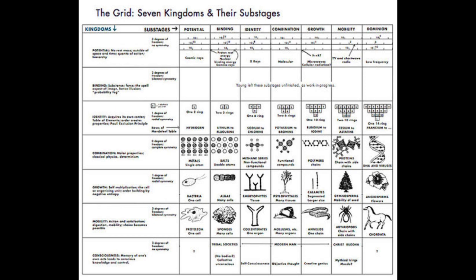For the principle of growth, we have annelids, which are the worm-like creatures that have one chain. This corresponds to the growth principle at the molecular level of polymerization, and at the plant level of the segmented calamites. An annelid is a chain, kind of like a centipede. For arthropods, we get the principle of mobility, which are chains with side chains. And finally, representing the principle of dominion for the animal kingdom, we get the chordata, or the vertebrates.